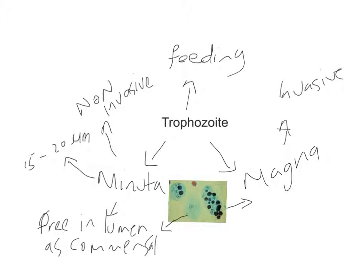The magna form usually occurs in the invasive stage of Entamoeba histolytica. During the invasive stage, the trophozoite enters the bloodstream and can phagocytose erythrocytes, or red blood cells. Trophozoites from acute dysenteric stools will often contain phagocytosed erythrocytes, and it is called the magna form.